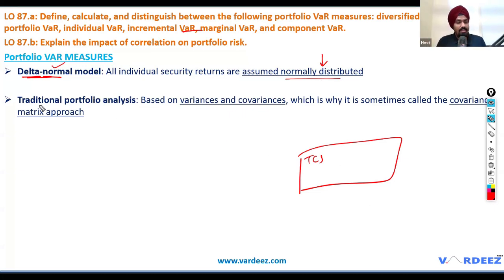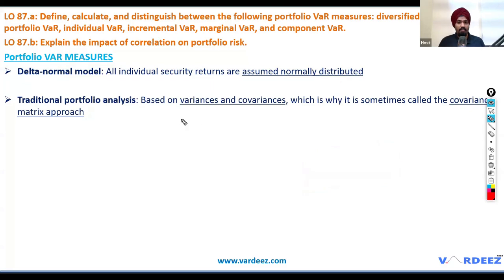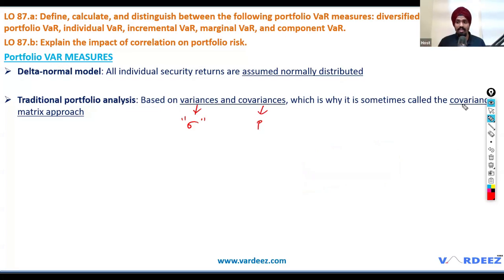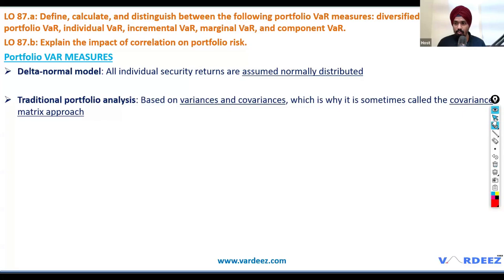Secondly, we'll use traditional portfolio analysis techniques. When we calculate VAR, we have variances and volatility, and at a portfolio level we also have covariances or correlations among different securities. That is why we'll be using the covariance matrix approach as well.